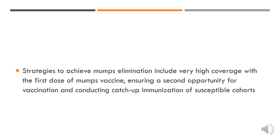In countries where MMR is a routine vaccination, strategies to achieve mumps elimination include high coverage of the first dose of mumps vaccine, ensuring a second opportunity for vaccination, and conducting catch-up immunization of susceptible cohorts.